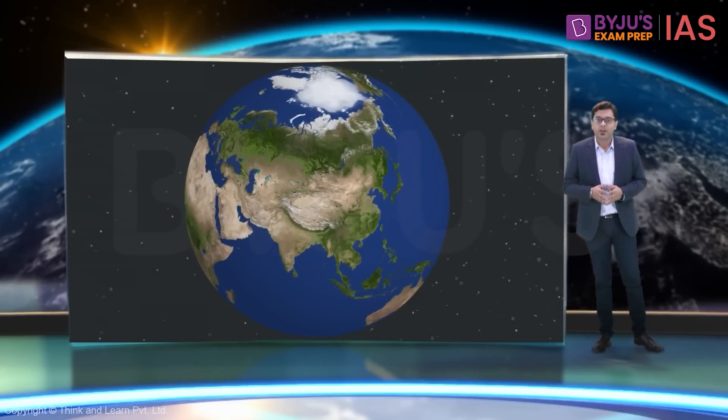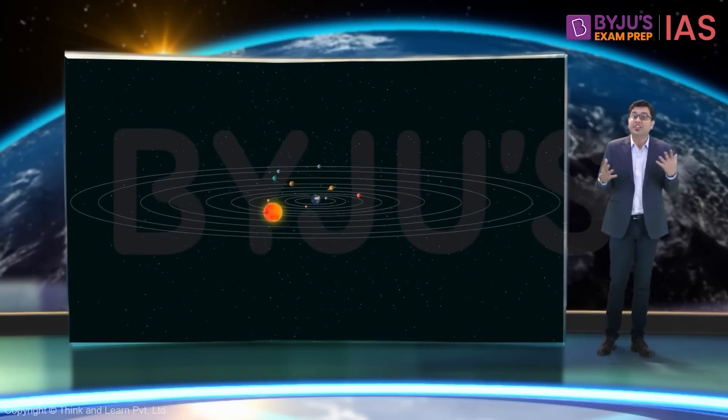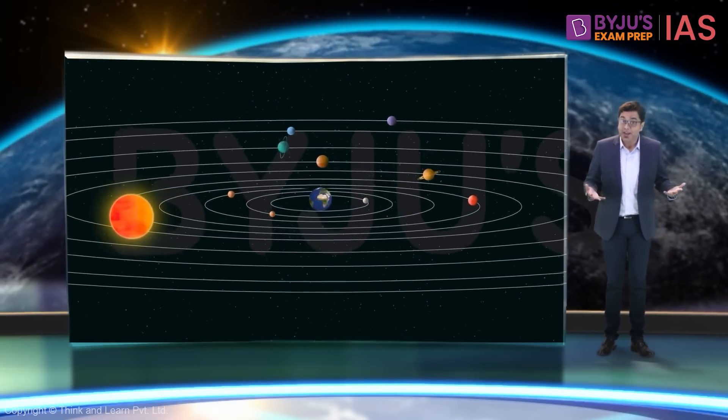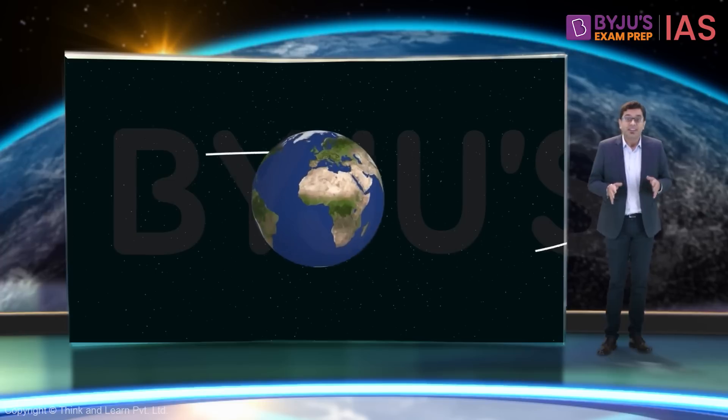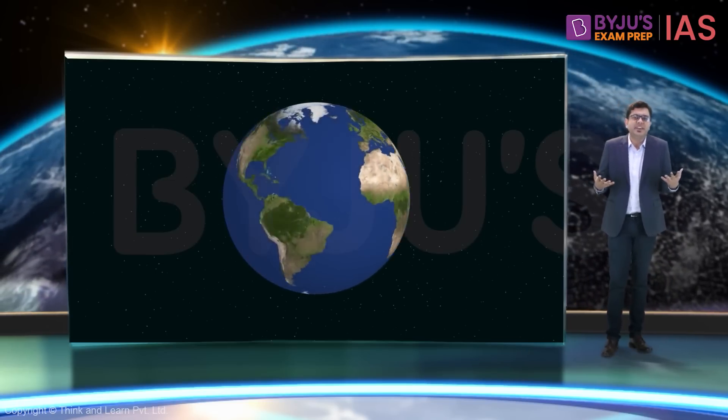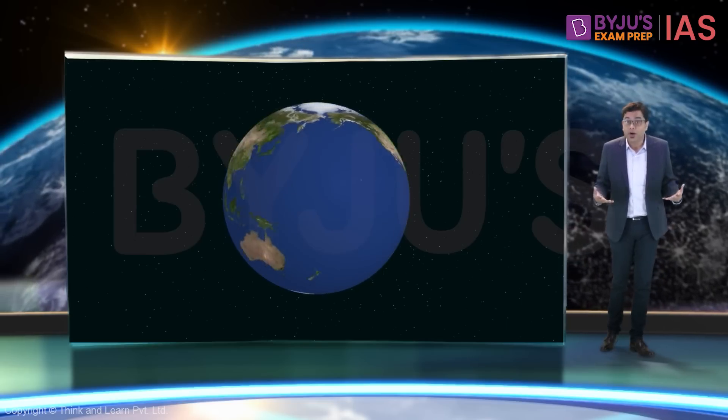Our ancestors thought that the earth was stationary and all the other celestial bodies rotated around it. Today, it is well established that the earth rotates around the sun. Rotating objects seem to rotate around an axis. How does that work?